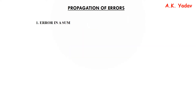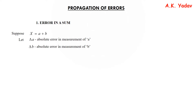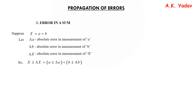Now, propagation of errors — error in a sum. Let us suppose x = a + b. Delta a is the absolute error in measurement of a, and in any calculation or measurement there is an error bound to happen. Delta a is the absolute error in a, delta b is the absolute error in b, and delta x is the absolute error in x. So we write: x ± δx = (a ± δa) + (b ± δb).